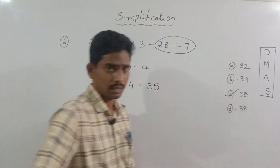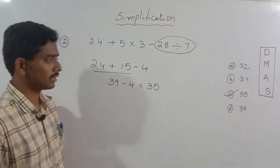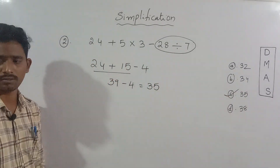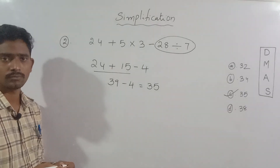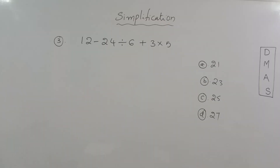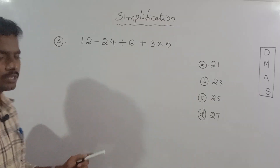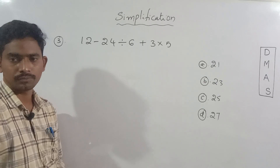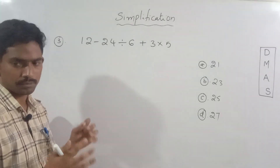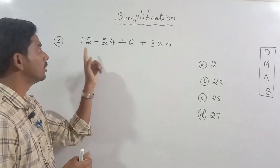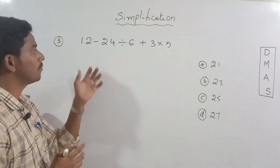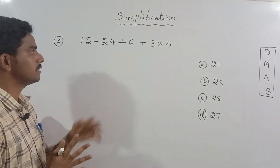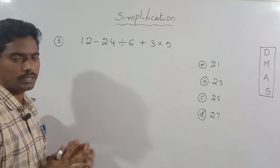35 is the correct answer. Note. Okay, look at this. I will read some words: 12 minus 24 divided by 6 plus 3 into 5.